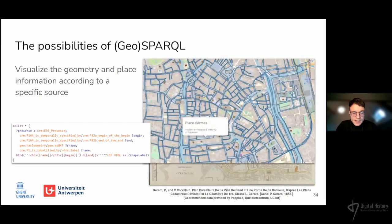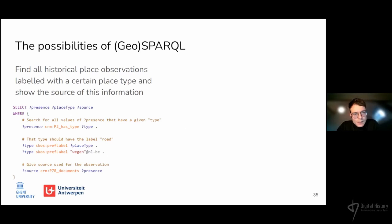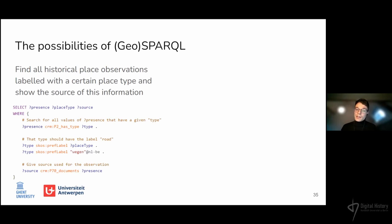Here you can see a visualization of the place geometries together with additional place information, such as the place name and the dating of the historical observation. With the gazetteer it is also possible to search for data across multiple sources. The next query looks within the gazetteer for all historical place observations labelled with a specific place type — in this case, the place type 'Road.' The results are contained within a table, each mentioning an observation of the type Road together with the source that documents that place observation. This kind of query could be very helpful for researchers interested in specific domains, such as historians interested in cinema history who are looking for places that once had the function of a cinema.